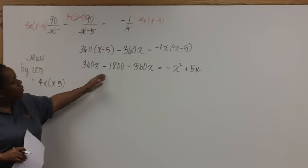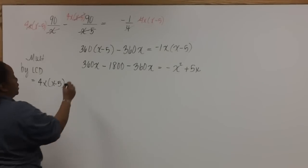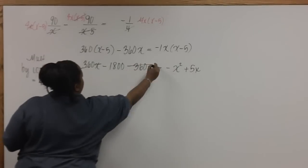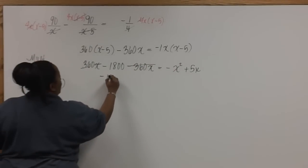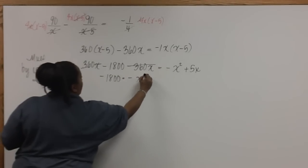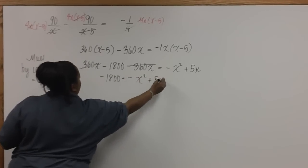Notice on the left side of the equation that the 360X and negative 360X cancel out. Now we're left with negative 1,800 equals negative X squared plus 5X.